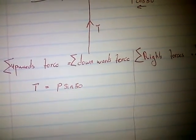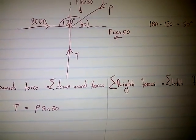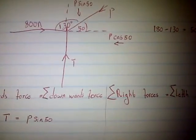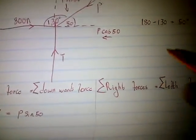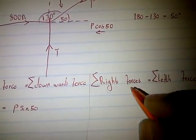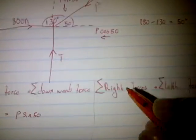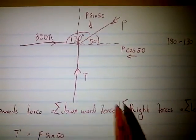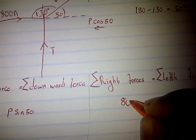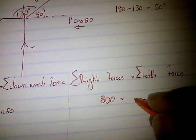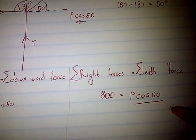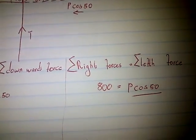We can resolve T and P at the same time. Starting with the horizontal components: all forces going to the right equal all forces going to the left. The force going to the right is 800 Newtons, so 800 Newtons equals P cos 50.